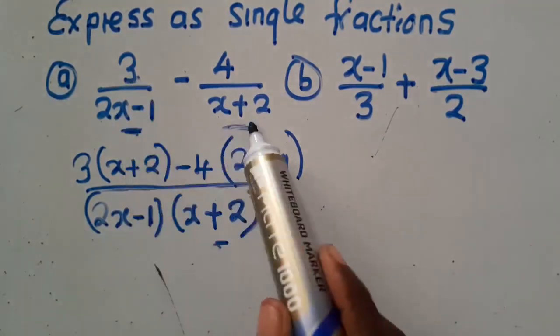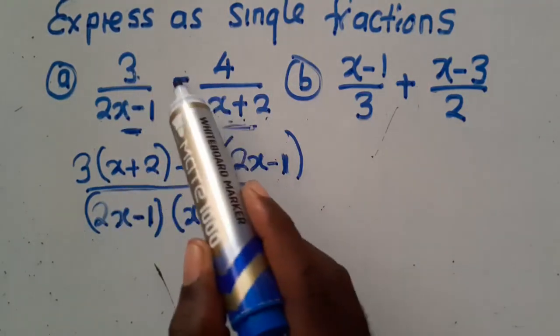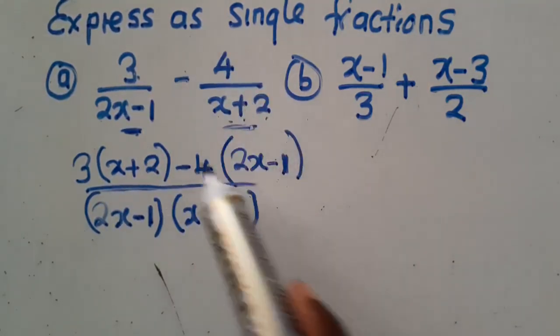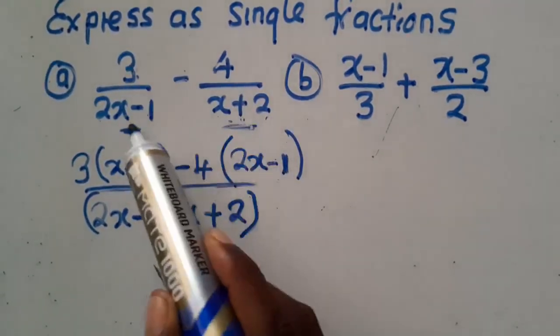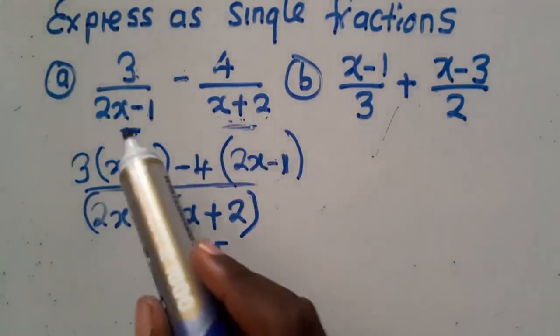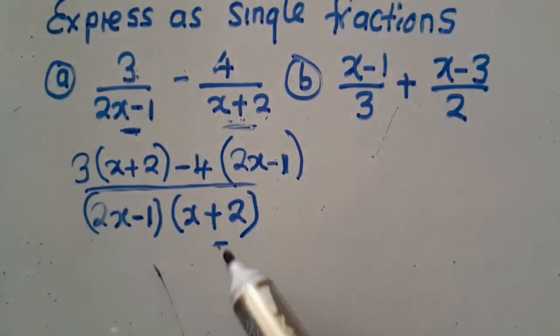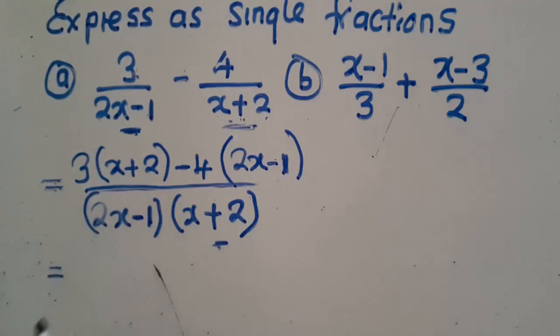So 3 will be multiplied with that one. 3 times x plus 2 minus 4, open bracket, 2x minus 1. This one is going with that one. This one is going with that one. If these two denominators are just brought down there. So you continue and say this is equal to, you start multiplying this times that.